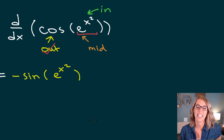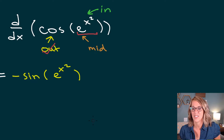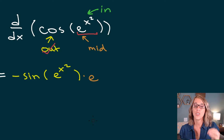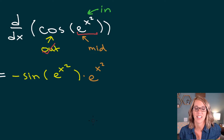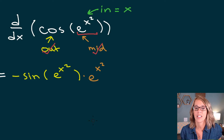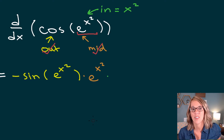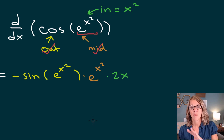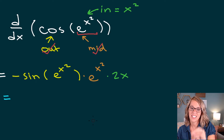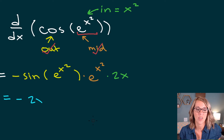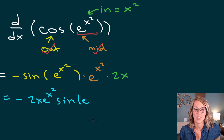Moving on to the middle layer — e to the. The derivative of the exponential base e is just itself, so this gives times e to the x squared, leaving x squared intact. Middle layer done. Now for the innermost layer, just x squared: the derivative is 2x. Reorganizing into a cleaner form — 2x out front, e to the x squared second, sine function last — the final answer is negative 2x e to the x squared sine of e to the x squared.